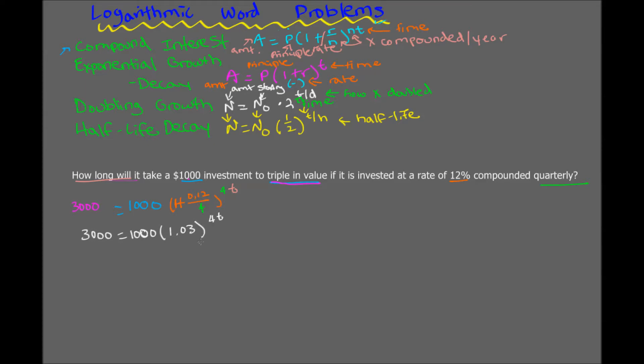Now what we have to do is solve as a logarithmic equation. The first thing we have to do is isolate the exponential part of the equation. So we're going to divide each side by 1,000. So you get 3 is equal to 1.03 to the 4T.